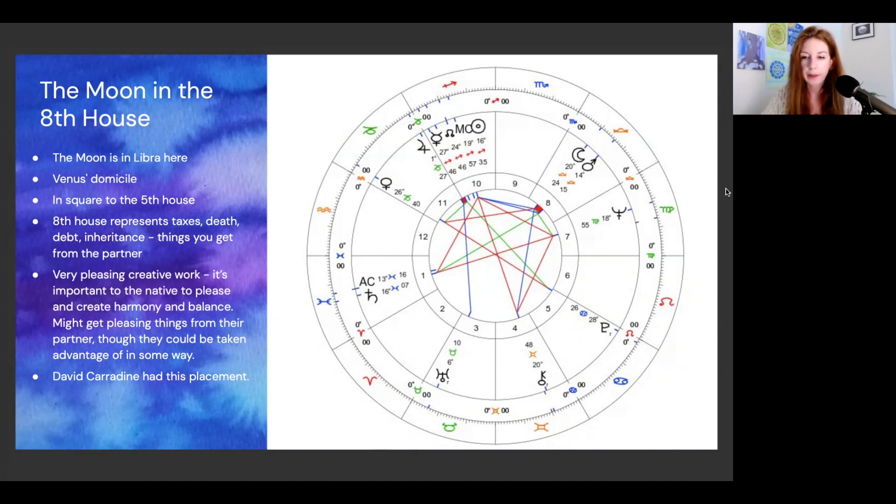David Carradine had this placement. He was an actor best known for playing martial arts roles. Mars is also in the eighth co-present with the moon, so the two are kind of acting together. He was a serial monogamist. He had five marriages. I say that because of the associations with the eighth house and divorce.